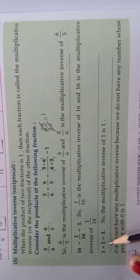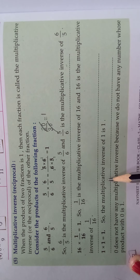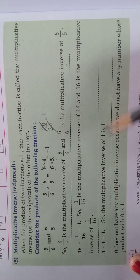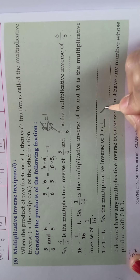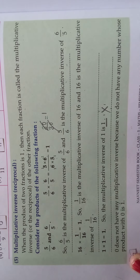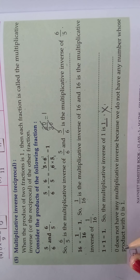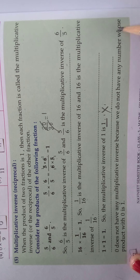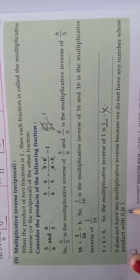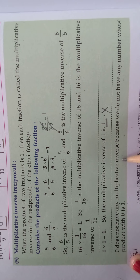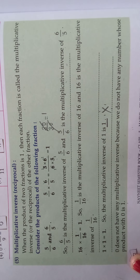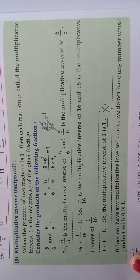1 × 1 = 1, so the multiplicative inverse of 1 is 1. The inverse of 1 is 1 — keep this in mind. Also, 0 does not have any inverse property, because there is no number whose product with 0 equals 1. So 0 does not have a multiplicative inverse.